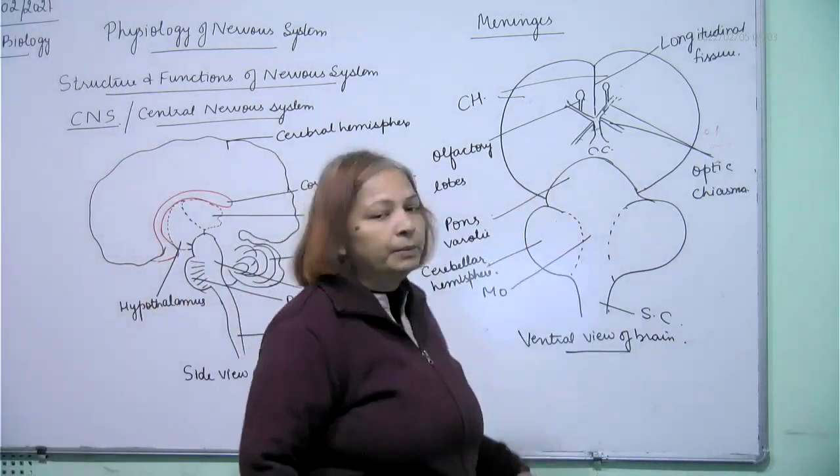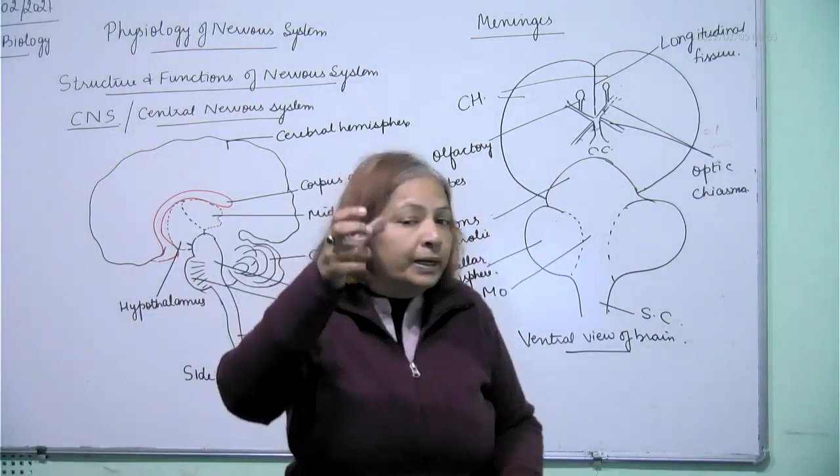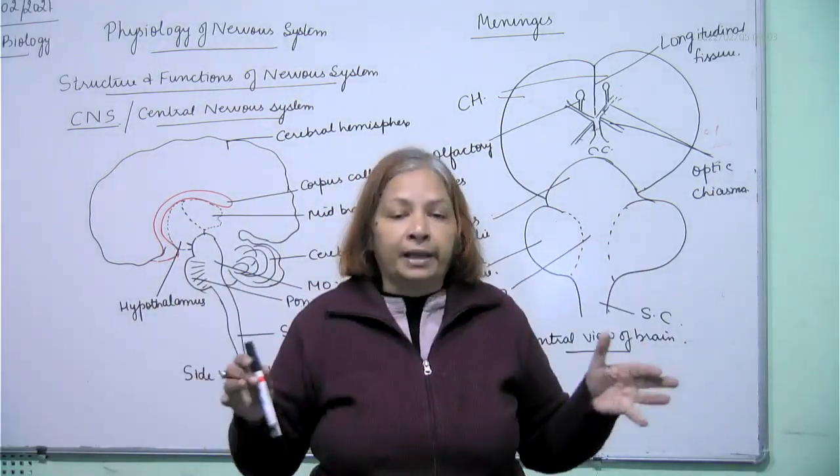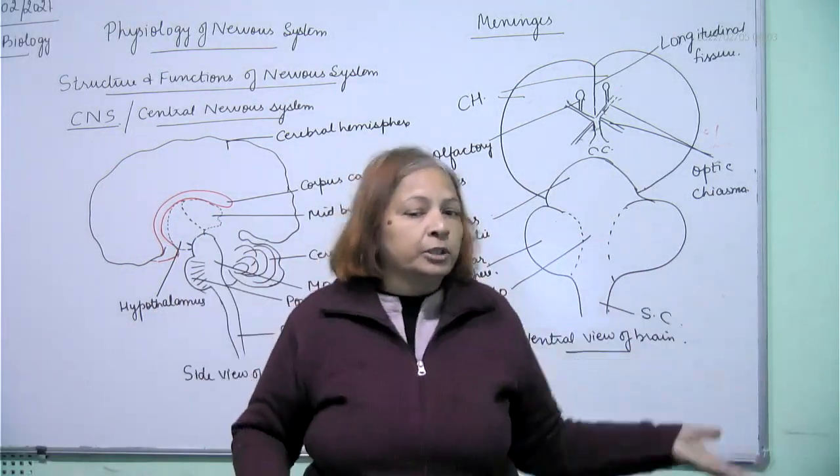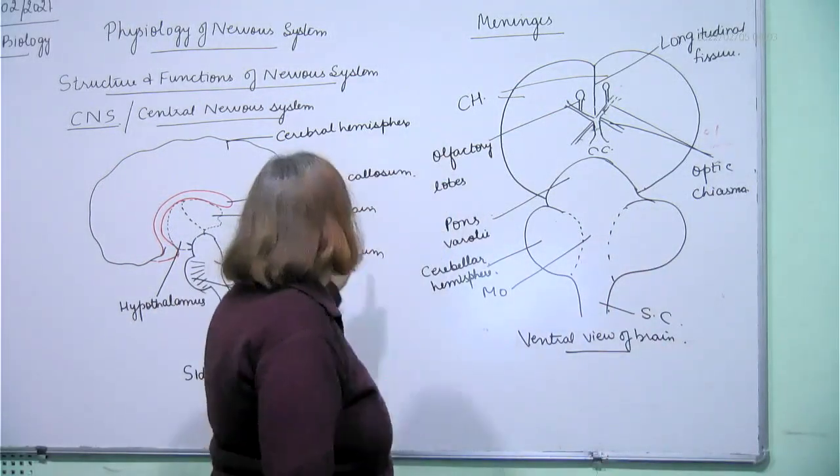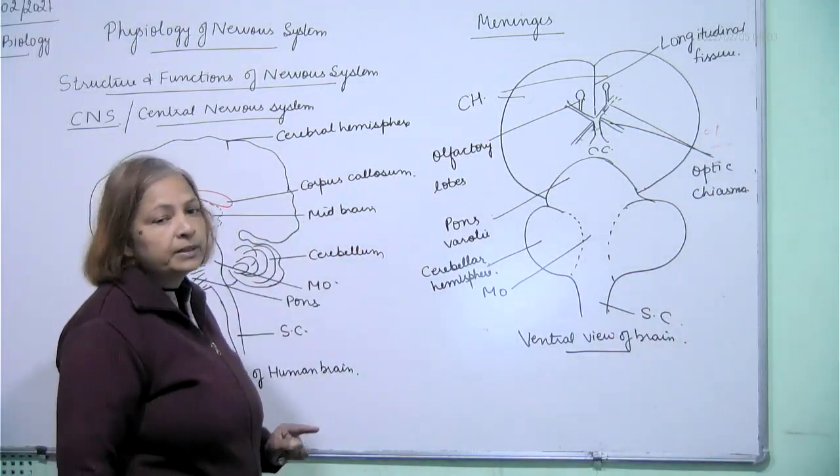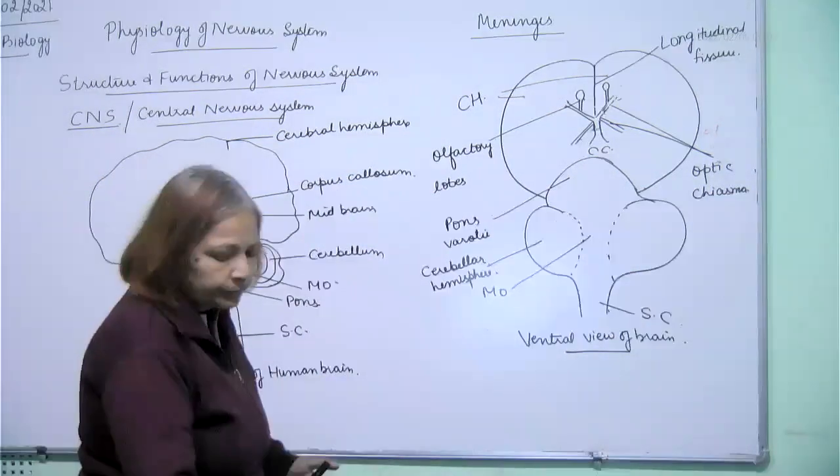And this bundle of nerve fibers which connect the two cerebral hemispheres, and this bundle of white fibers is called as corpus callosum.